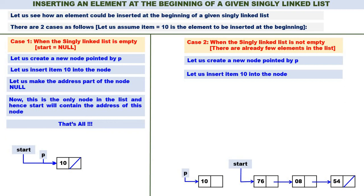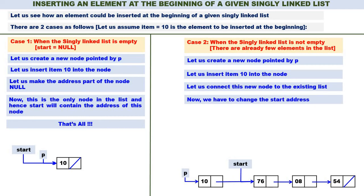Now what should be the address part of P? P should be connected to the linked list. Therefore, the address part of P should contain start. Now let us connect this new node to the existing list — address part of P should contain the address of start. Now should start remain the same or should it be changed? Yes, it has to be changed. Now the starting node is not 76; the starting node is 10. Therefore, change the address of start — start, instead of containing the address of 76, will now contain the address of 10.